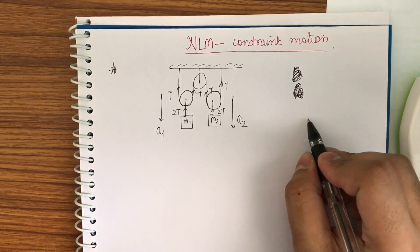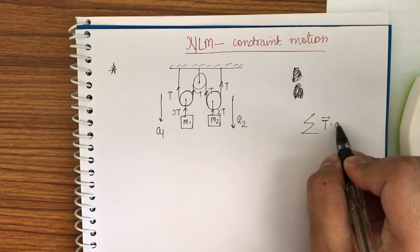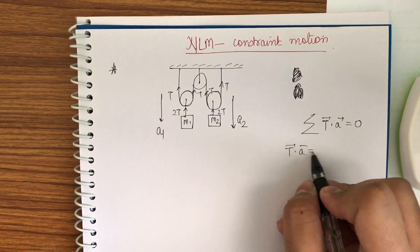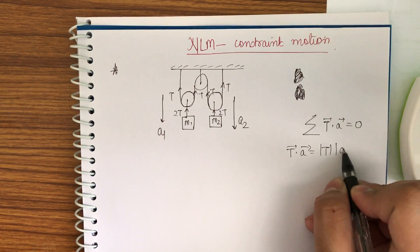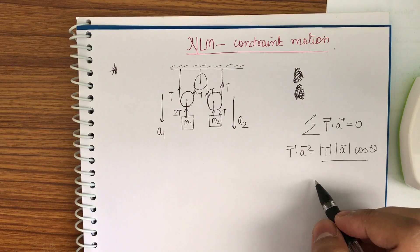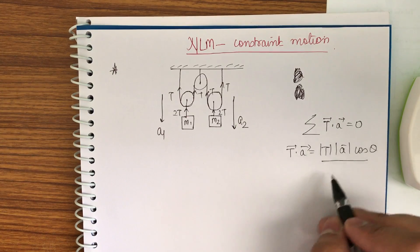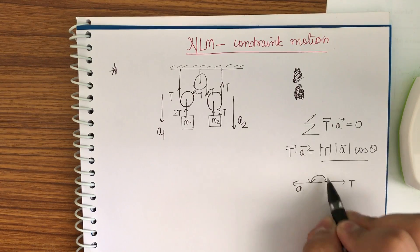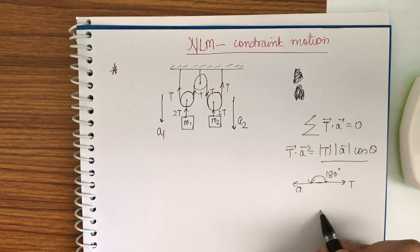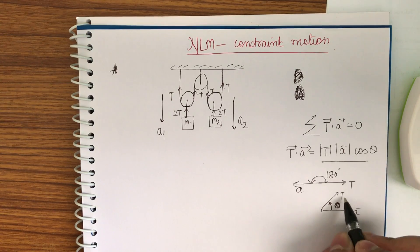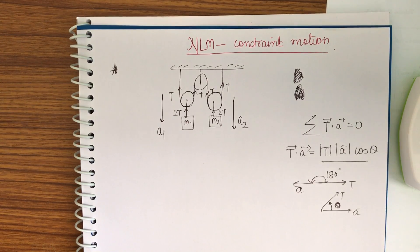The trick is to do summation of T dot A equal to 0. T dot A means mod T, mod A, into cos of theta — that is the dot product taught in vectors in basic physics. The theta angle is between T and A. For example, if T is here and A is here, the angle between them is 180 degrees. If T is here and A is here at some angle theta, then it will be T into A into cos theta — that is T dot A.